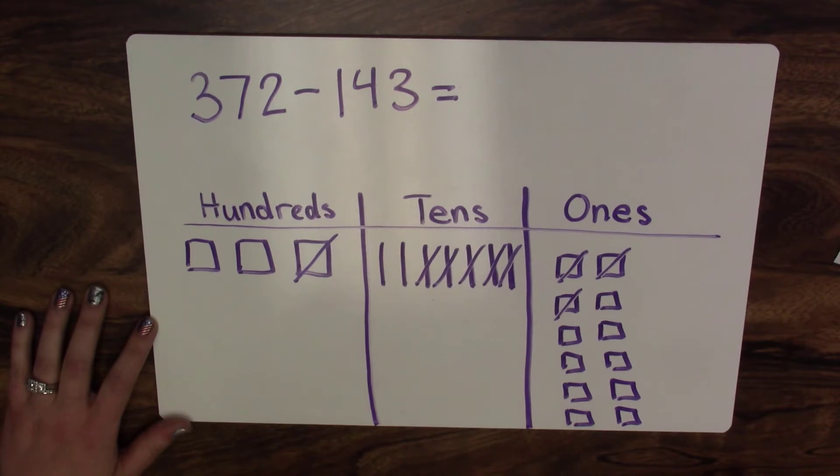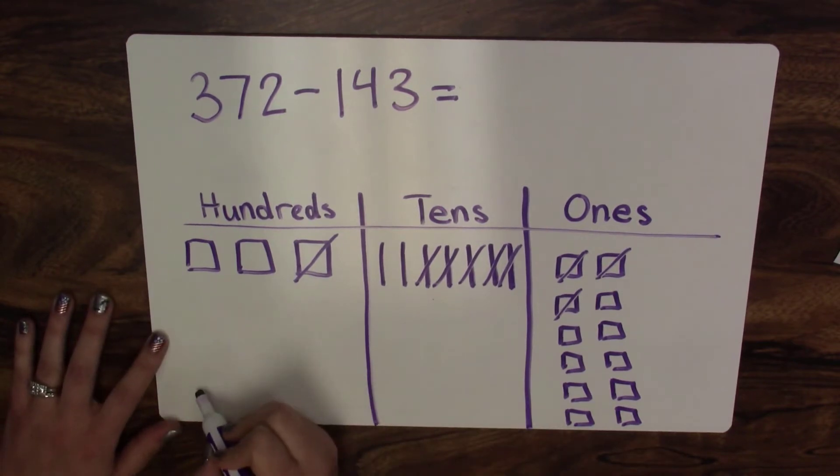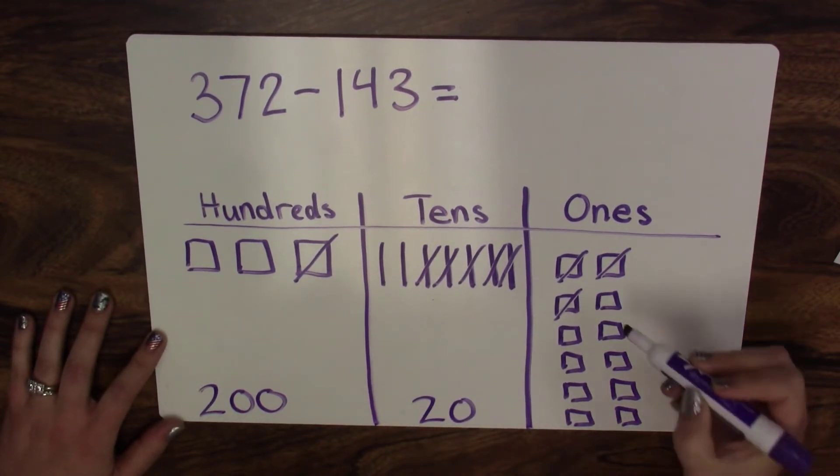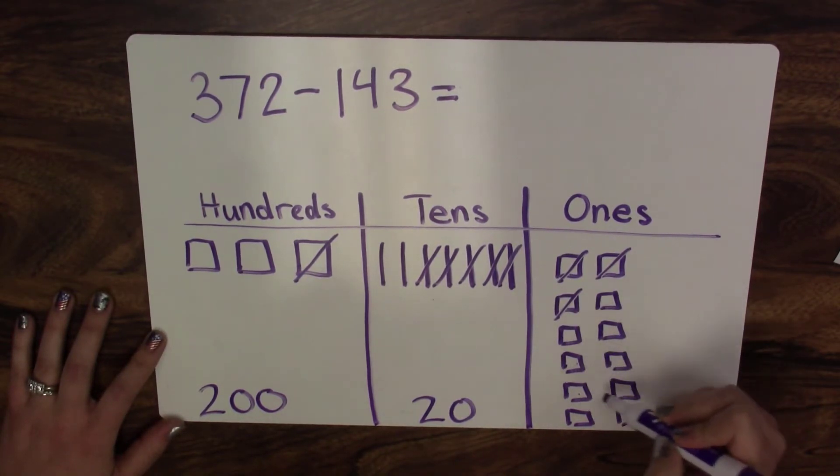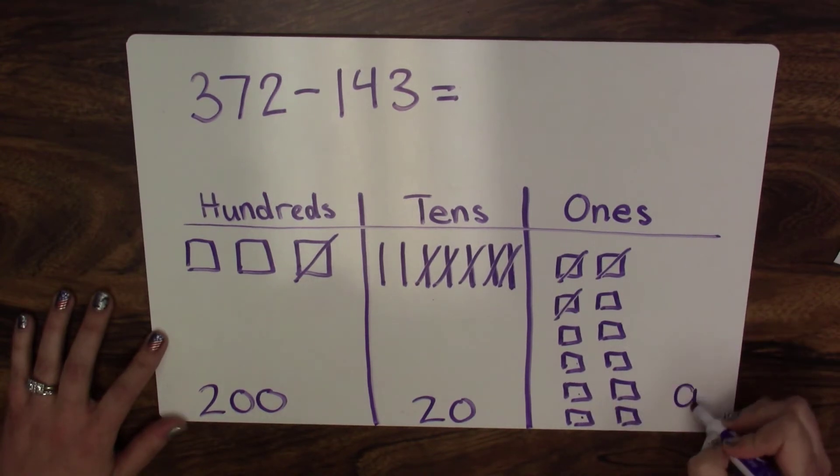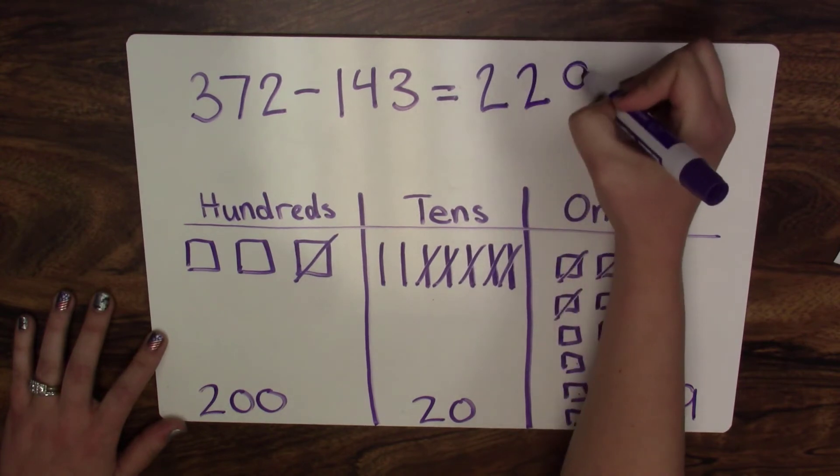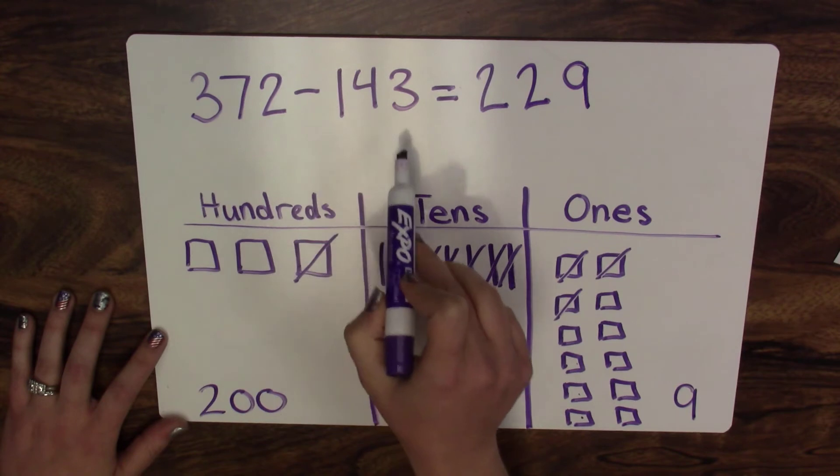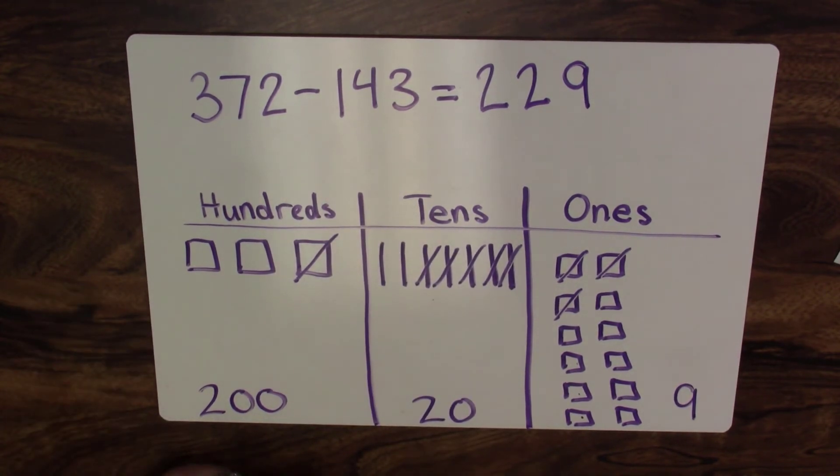When I count my place values, I end up with two hundreds, two tens which is twenty, and nine ones. When I put this together, I get two hundred twenty-nine. So the difference of three hundred seventy-two minus one hundred forty-three equals two hundred twenty-nine.